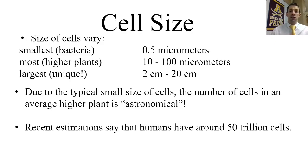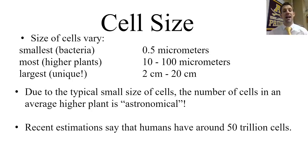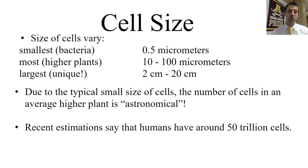Cells are incredibly tiny — they're microscopic. Because they're so small, you can fit a lot of them into any given space. Recent estimations put the number of cells inside a human around 50 trillion, so you can imagine how many cells you would find inside a redwood tree, which is substantially larger.